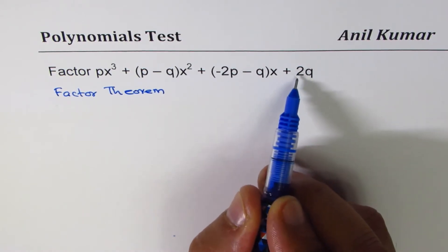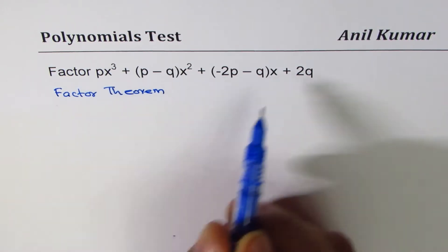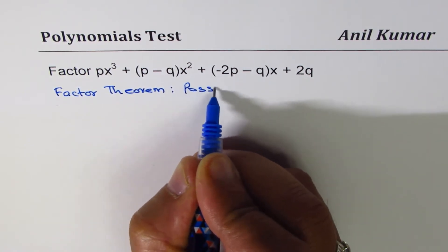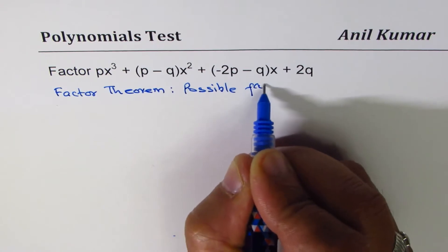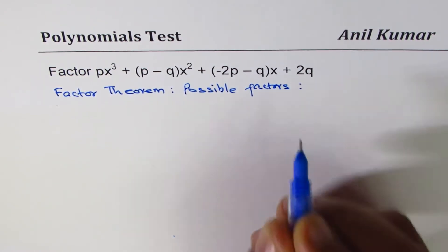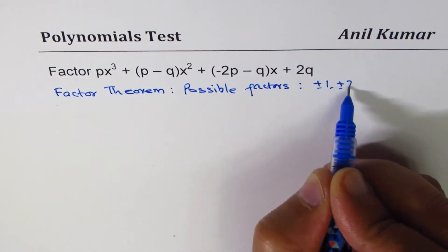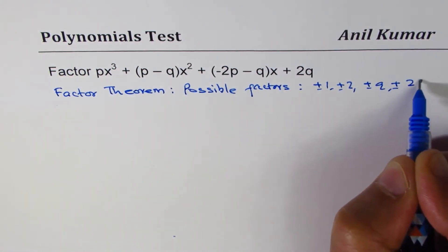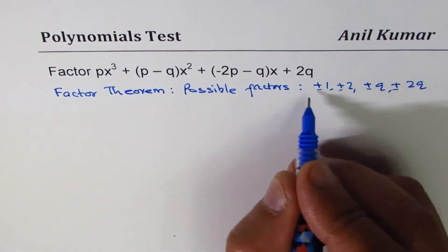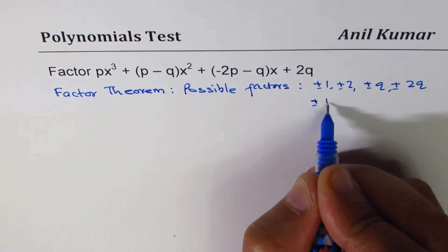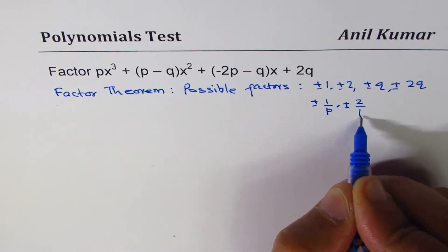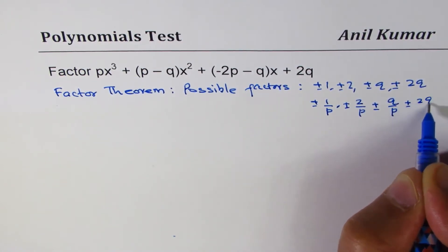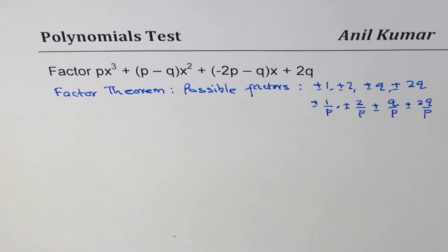Possible factors are factors of 2q divided by factors of p - the constant term and the leading coefficient. So we can write ±1, ±2, you can also write ±q, ±2q, divided by p. So we could have all this combination with 1/p, ±2/p, ±q/p, and ±2q/p.